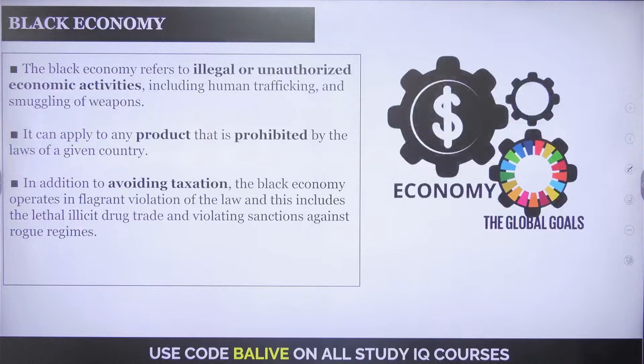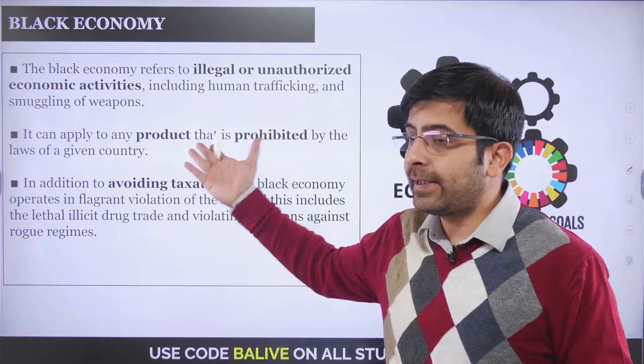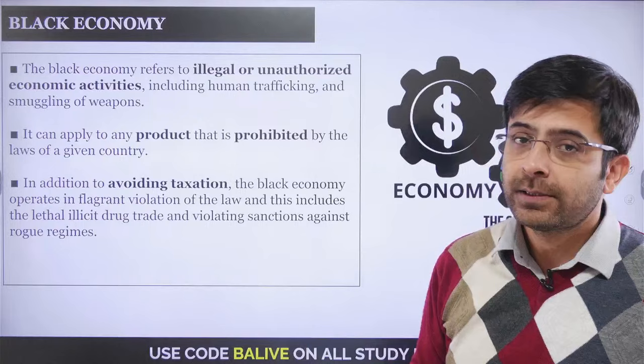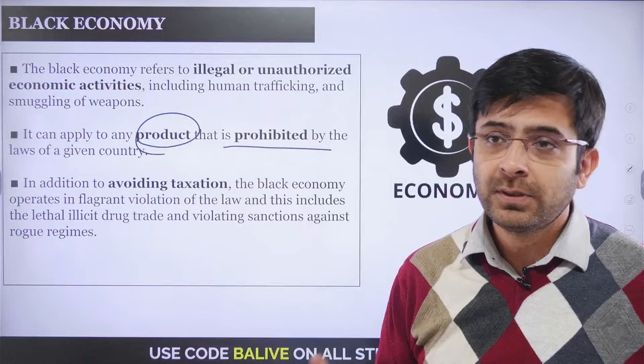Black economy is to do with all illegal or unauthorized economic activities. Unlike gray which is legal but unauthorized, black economy activities are both illegal and unauthorized. It applies to any product prohibited by law — narcotics, trans-border sale of animal hides, bones, skins — all of that comes under the definition of a black economy.